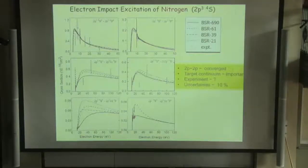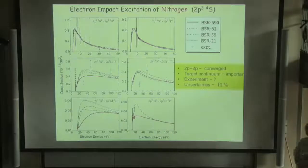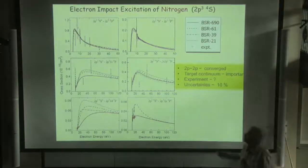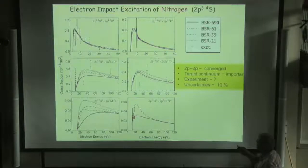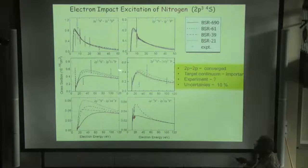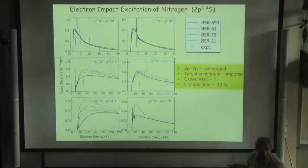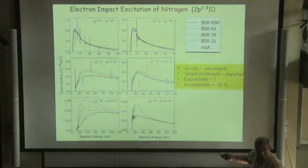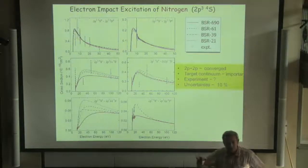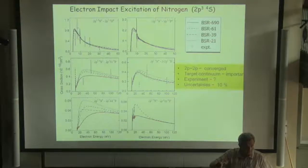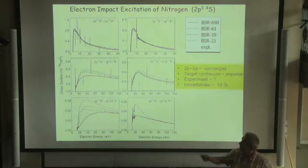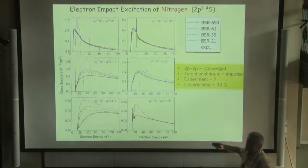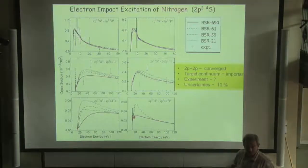One more result, for example, our recently published result is nitrogen. Here, what surprised us: transitions between terms on the ground configuration are very almost not affected by different approximations. Here, comparing different estimations provides us very good conclusion that here cross-section can be considered very accurate, a few percent. And the experiment is not, because here, very big error bars.